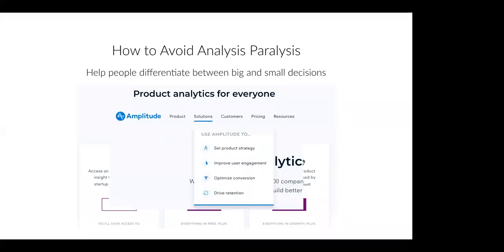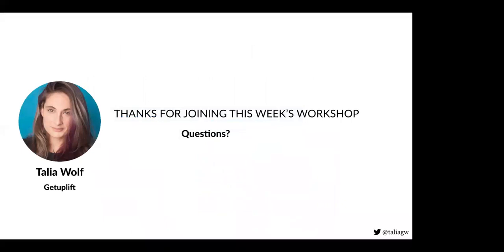Those were our three cognitive biases for today. As promised, it was super quick and as actionable as possible. I wanted to quickly cover loss aversion, the bandwagon effect, and analysis paralysis — three super simple cognitive biases that you can immediately apply to your websites and emails. Make sure you're using them, or check if you're overusing them, or whether you should be avoiding analysis paralysis because it's confusing people or sending them away.